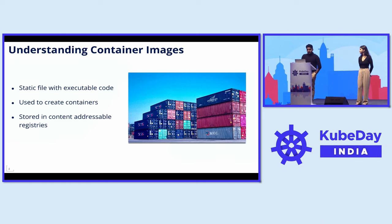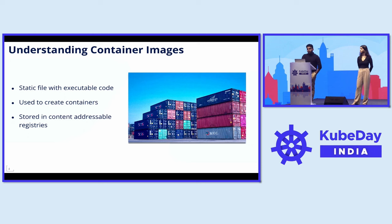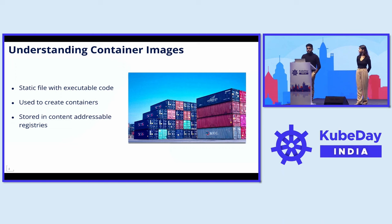A container image is stored in content-addressable storage, which means the URL of a container image is the proof of the content that lives there. The URL has a digest, and when you pass it through a SHA-256 checksum generator, you get the digest back.